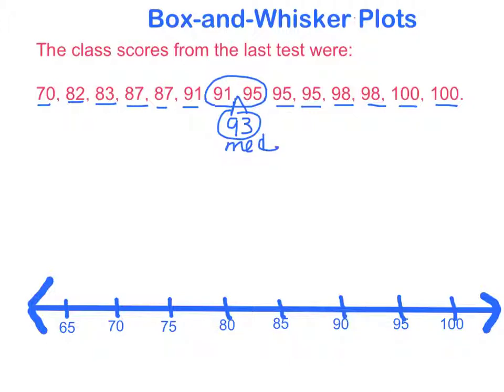Now we want to find the median of the lower half. So all of these numbers are in the lower half including this 91 right here. The reason it's included is because we didn't need it for the median. We didn't actually use it. So now let's find the median of the lower half. Again, let's cross out in pairs until we find a middle number. In this case 87 is our median.